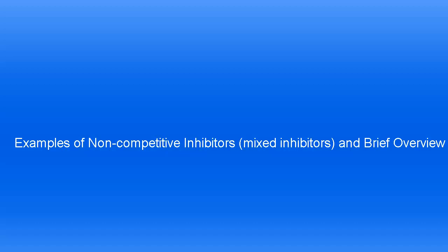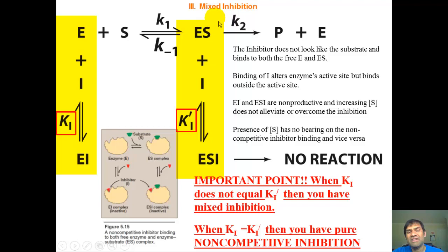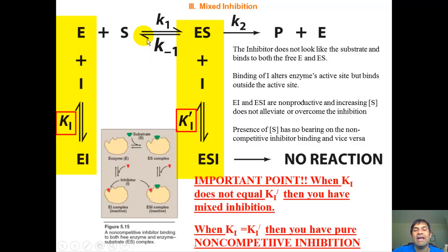The final type is mixed inhibition, which combines competitive and uncompetitive inhibition. Specifically, in pure non-competitive inhibition, the inhibitor binds with equal propensity to both the free enzyme and the enzyme-substrate complex, meaning their dissociation constants are equal. This simplifies the Lineweaver-Burk plot.